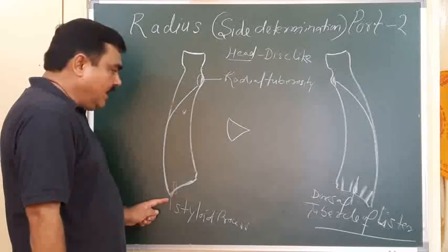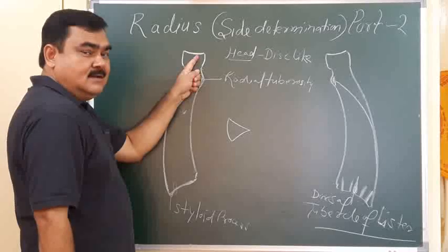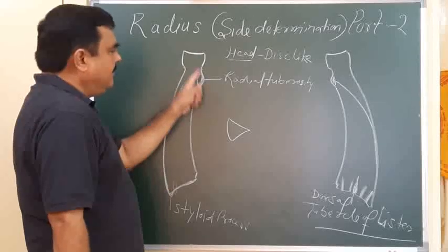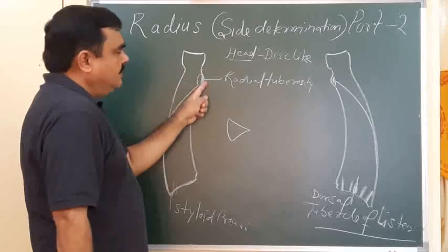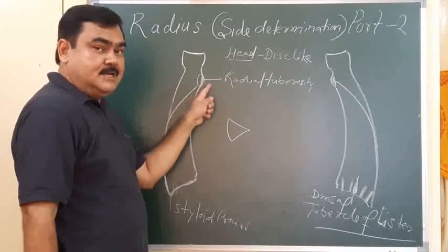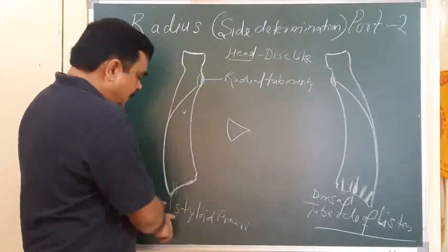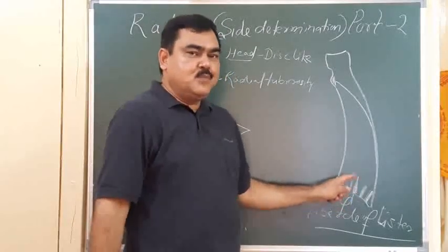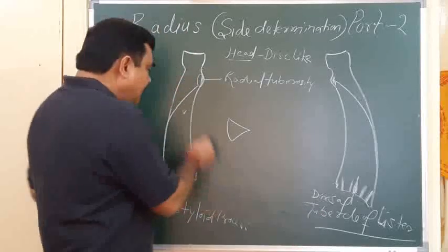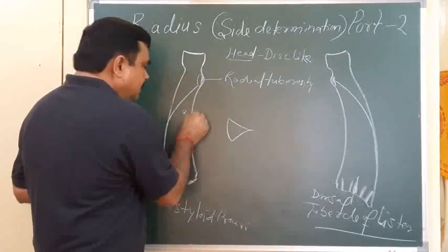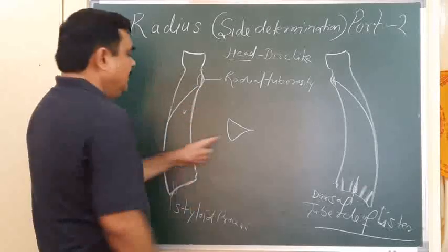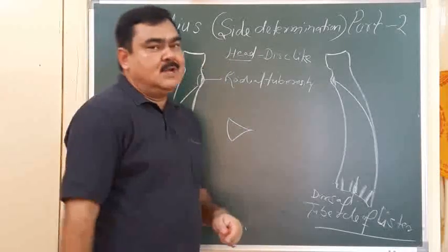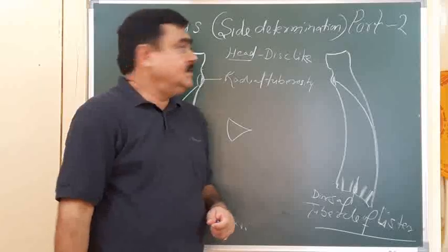The lower end has a projection — the styloid process. Near the upper end there is the radial tuberosity, which lies medially. In the lower end there is the dorsal tubercle of Lister, which lies on the posterior surface of the lower end. The sharpest border is the interosseous border or medial border. Keeping these four points in mind, you can easily determine the side of the radius.